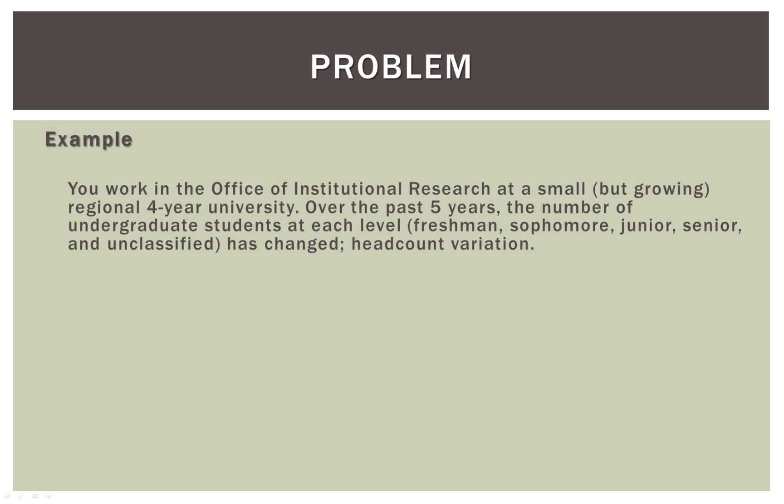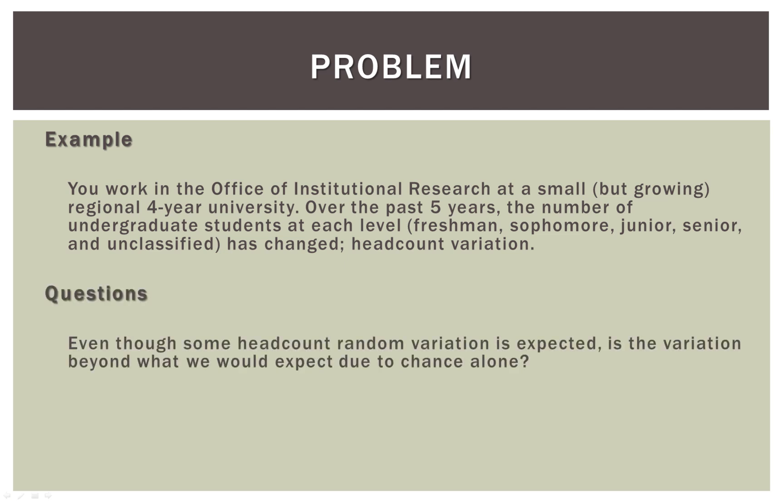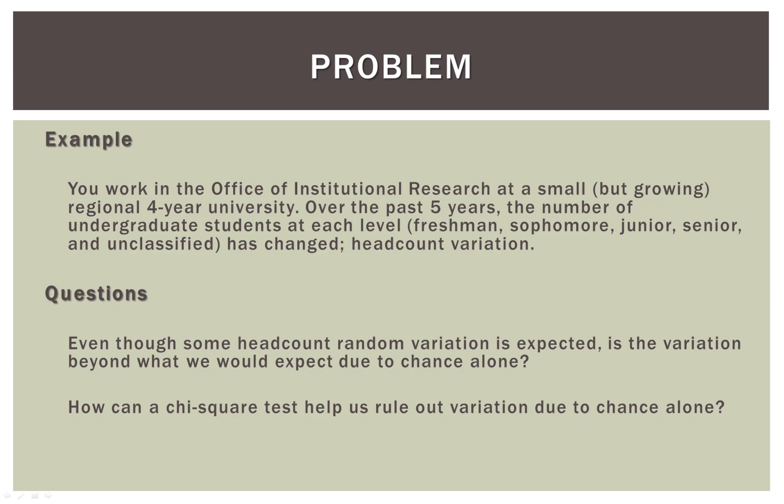We have the same problem from the previous videos. We work in the Office of Institutional Research at a small but growing university, and over the past five years the number of undergraduate students at each level — freshman, sophomore, junior, senior, and an unclassified group — has changed. Even though some headcount random variation is expected, the question is whether the variation is beyond what we would expect due to chance alone, and how we can use SPSS to conduct our chi-square test.